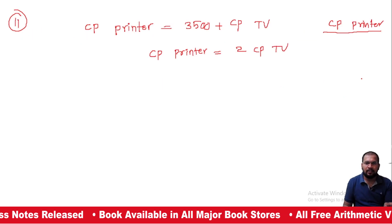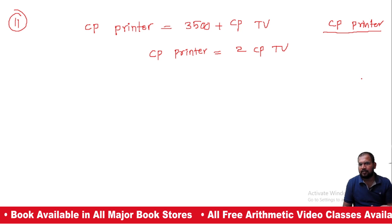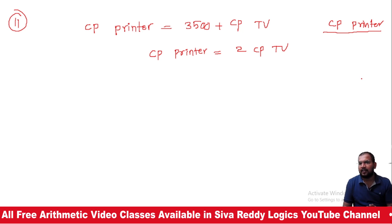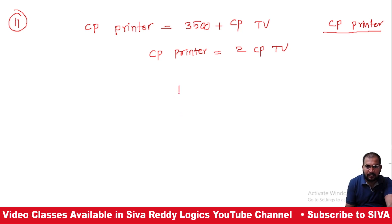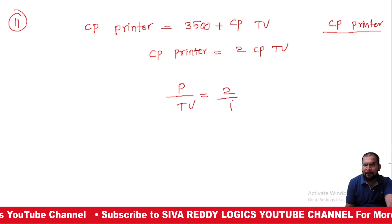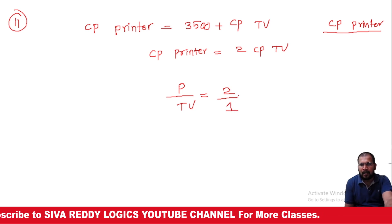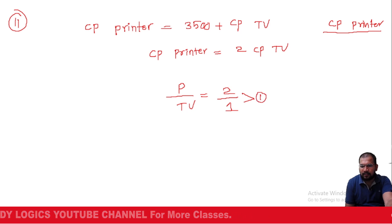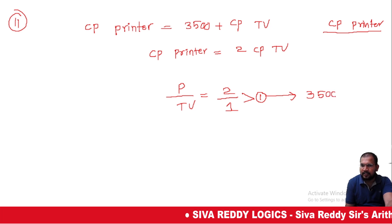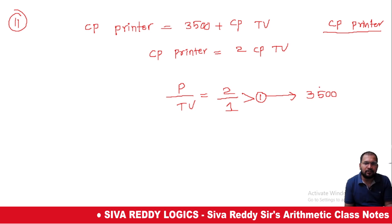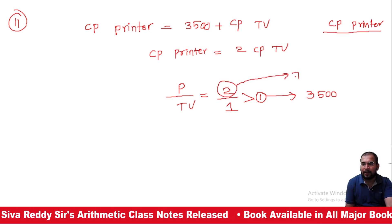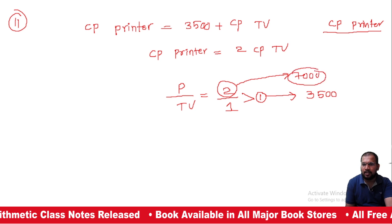Cost price of the printer and TV: the difference is 31500. TV to printer ratio is 2:1. The difference is 1 part, which equals 31500. So 2 parts (printer cost) is 63000. Wait — 1 part is 31500, so 2 parts is 63000. The answer is 63000.